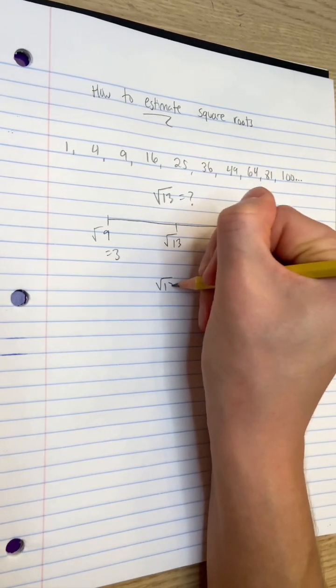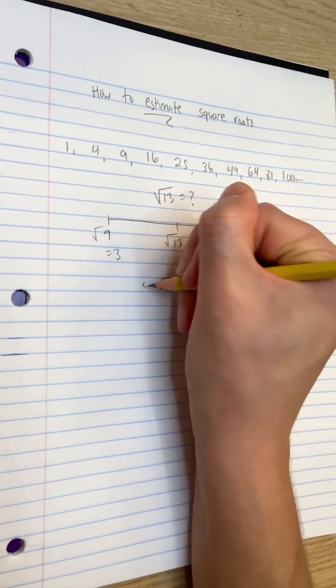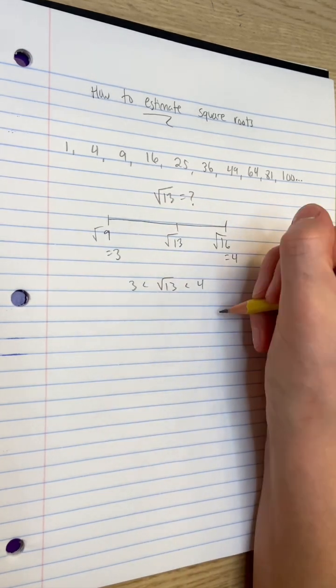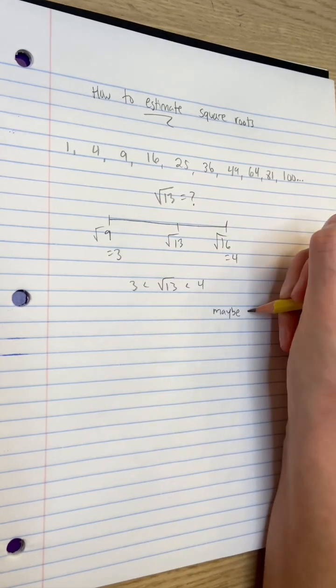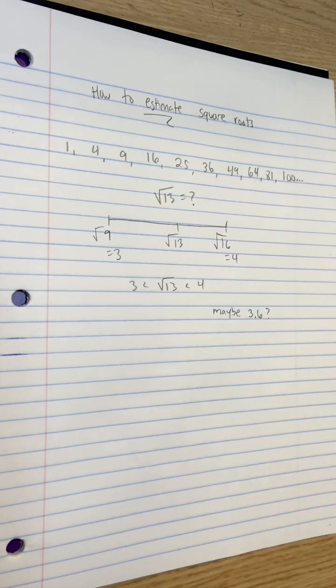But we know the square root of 9, that's 3, and the square root of 16, that's 4. Thus, the square root of 13 must be greater than 3 but less than 4. I'll guess 3.6.